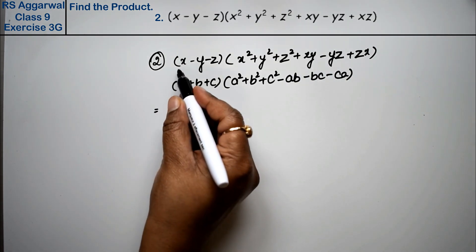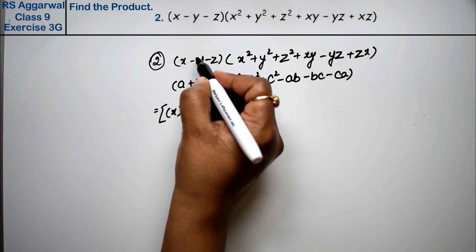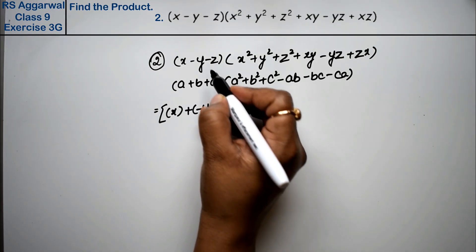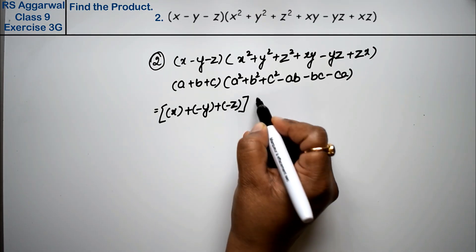So what do we write? a is x, but here is minus y so we write minus y in brackets, plus c is a plus but it is minus z so we write minus z in brackets.